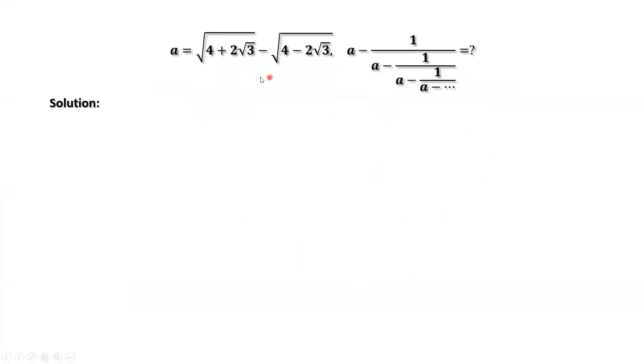How to simplify this expression? There are different ways. This is a nested square root. I have some video to discuss how to simplify the nested square root. Here, we use a different way to simplify A.